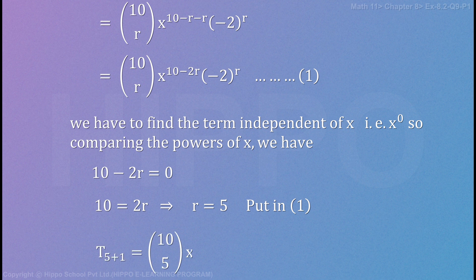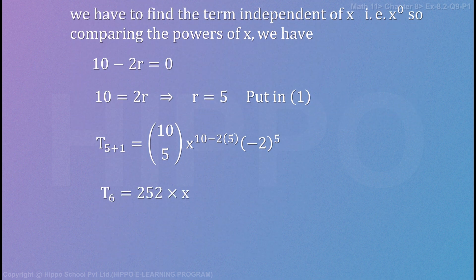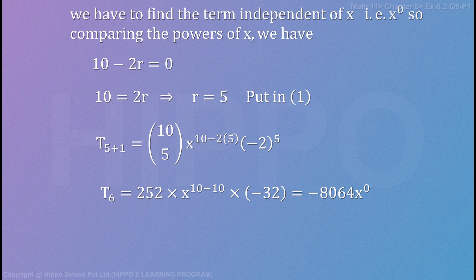Toh T r jabbe 5 plus 1 equals to 10C5 x ki power 10 minus 2 times 5 minus 2 ki power 5. T6 equals 10 composition 5 equals hoota hai 252 multiply by x ki power 10 minus 2 times 5 zero bhi 10 multiply by minus 2 ki power 5 hoti hai, which is equal to minus 32, which is equal to 252 ko minus 32 se multiply by x. Toh minus 8064 x ki power 0 ban jayegi, which is equal to minus 8064.